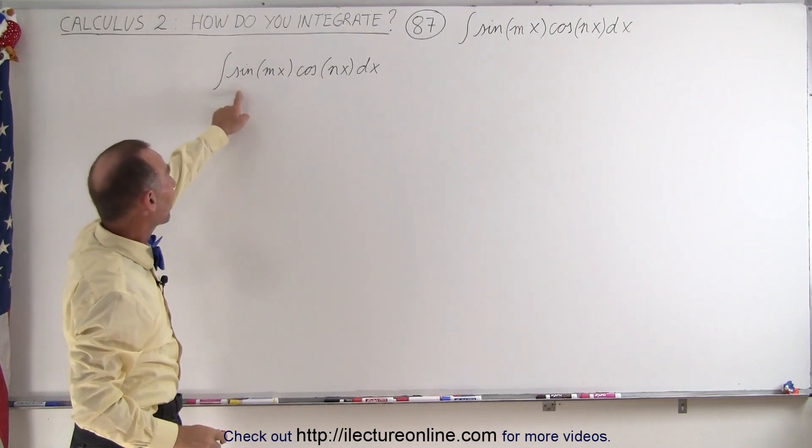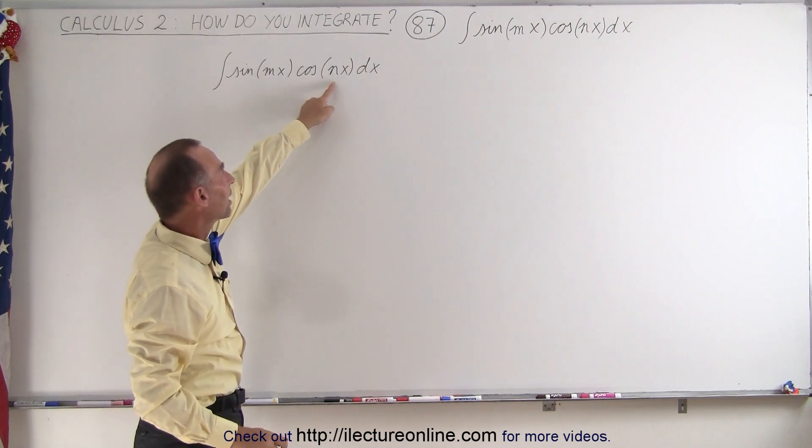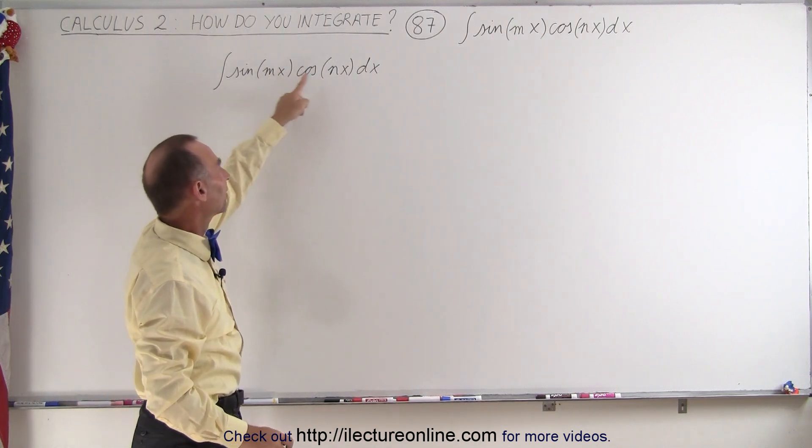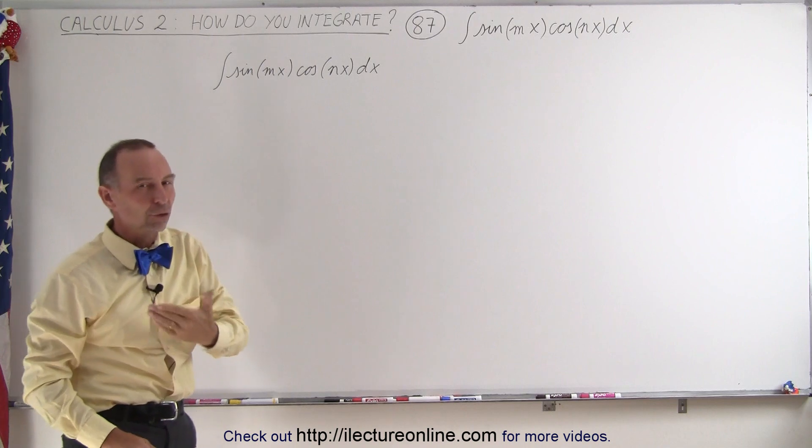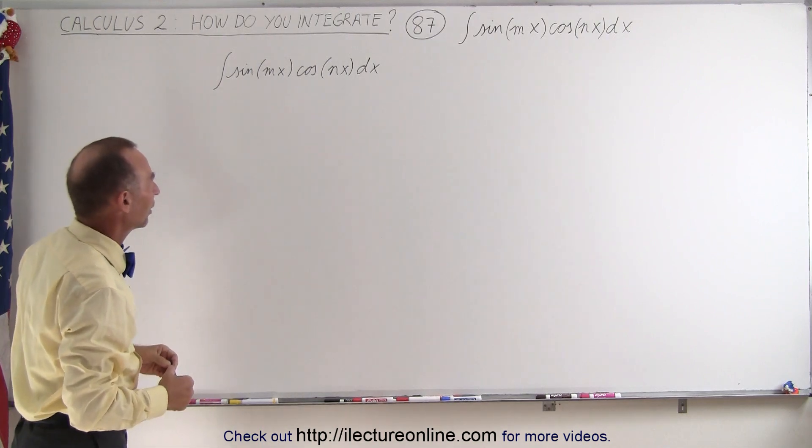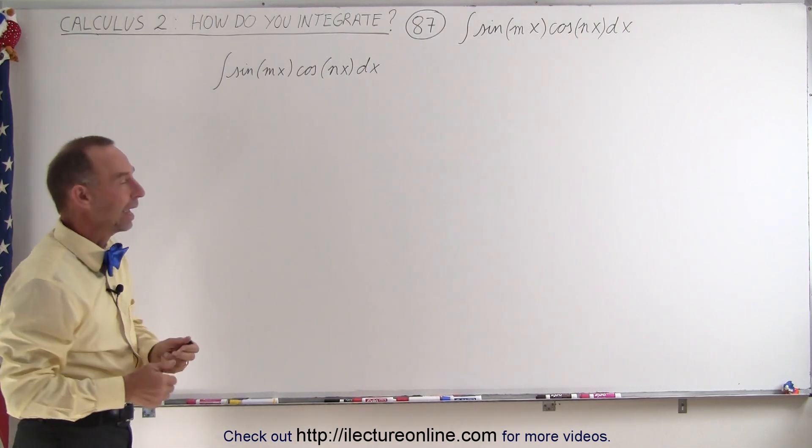In the previous video this was the sine of ax times the cosine of ax, but now we have mx and nx, and m and n are assumed not to be equal to one another. They could be but they don't have to be.